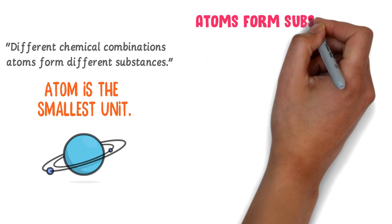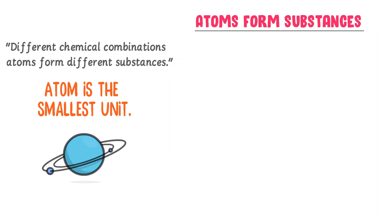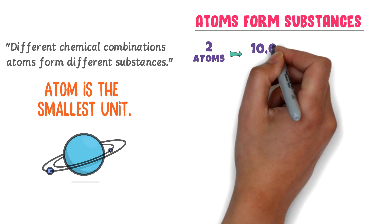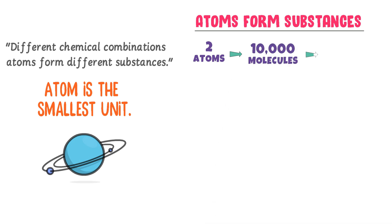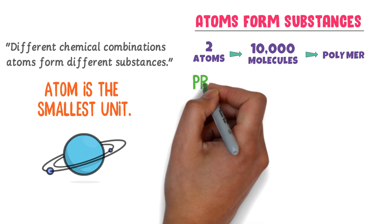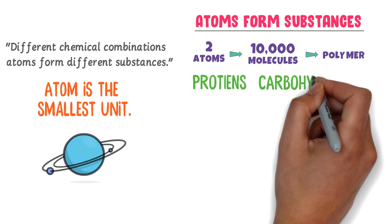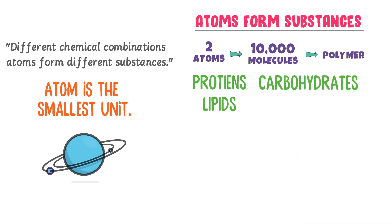How do atoms form substances? When two or more atoms combine together chemically, they form a molecule. When many molecules — like 10,000 or more — combine together, they form polymers like proteins, carbohydrates, lipids, and nucleic acids.